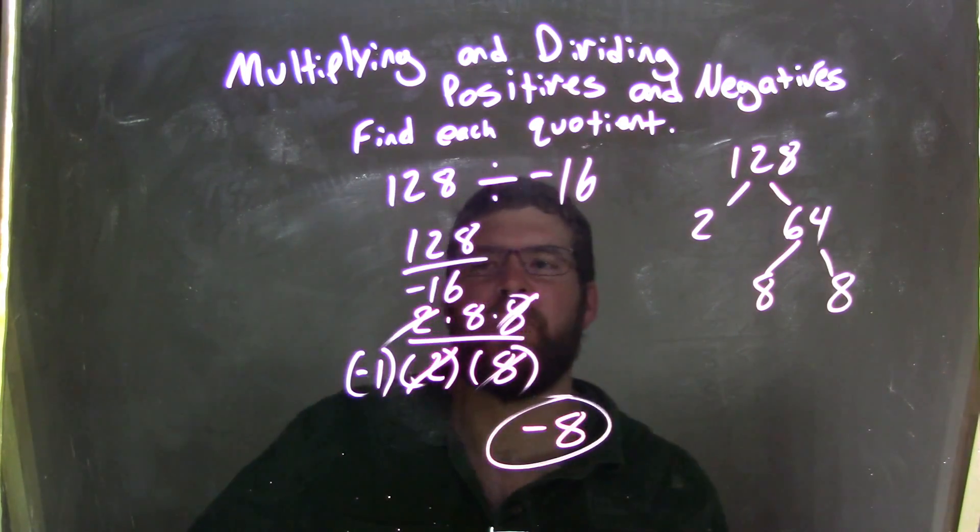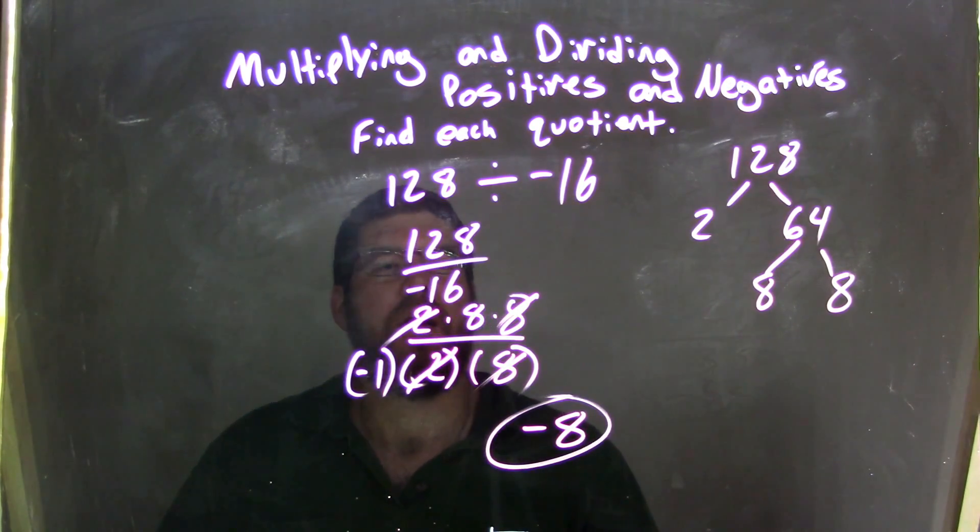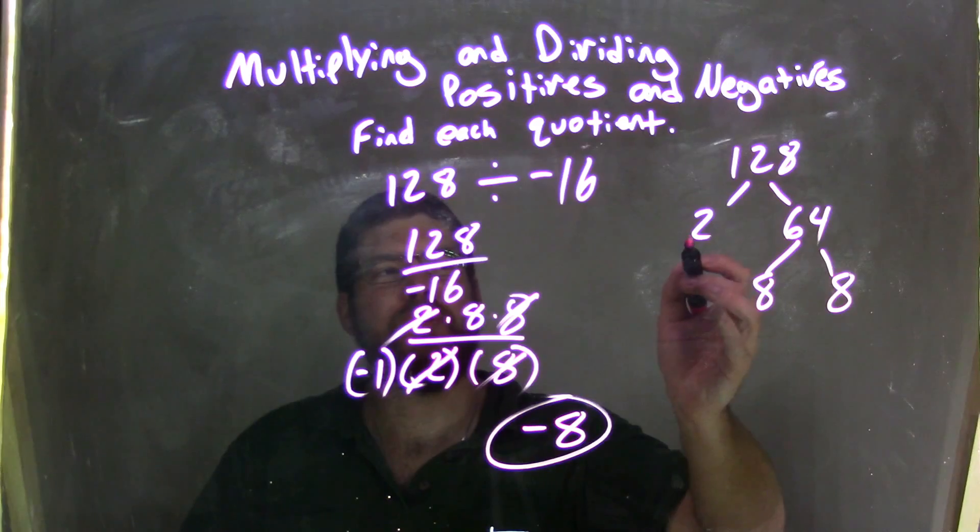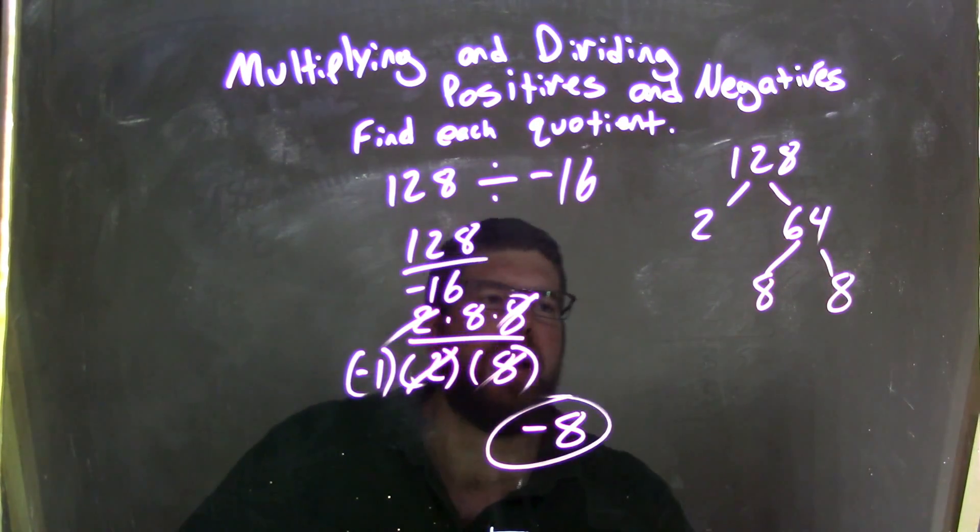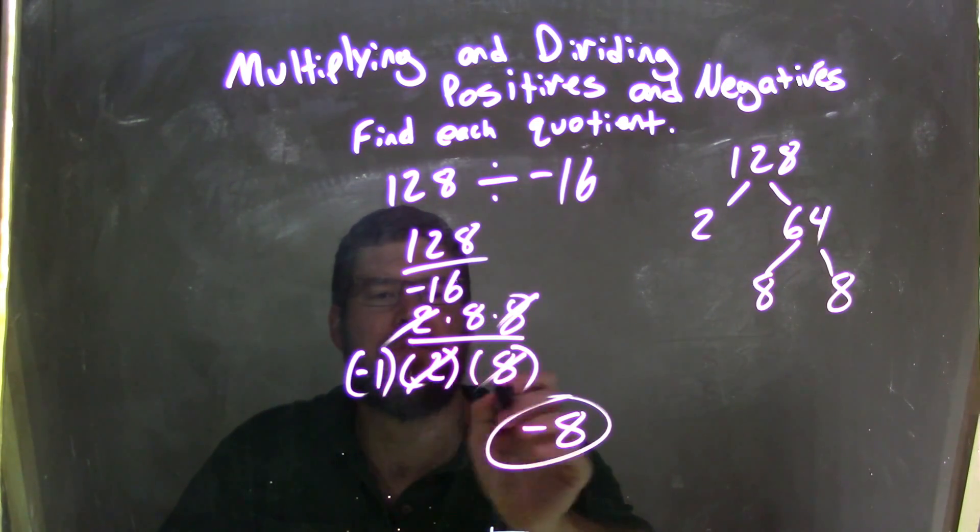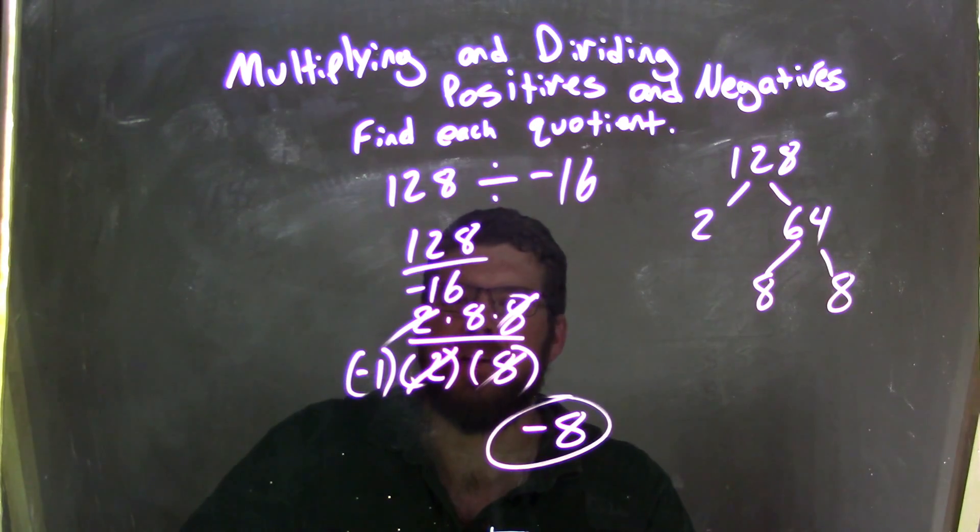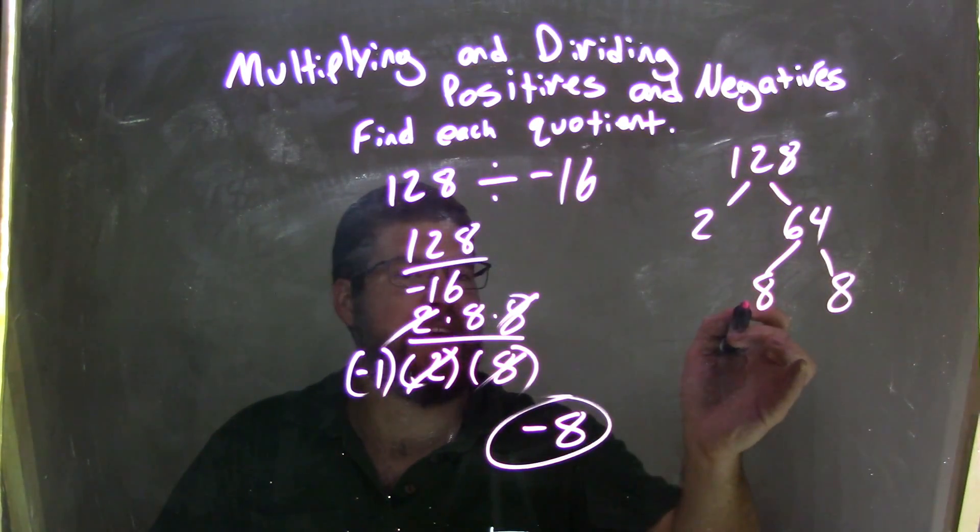So again, let's recap. We had 128 over negative 16. 128 I can break down to be 2 times 64, and 64 is just 8 times 8. I stopped there because I knew negative 16 was negative 1 times 2 times 8, and from there I would have basically enough numbers to cancel out.